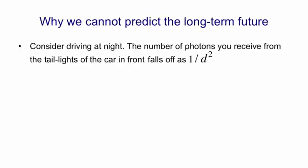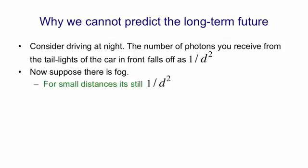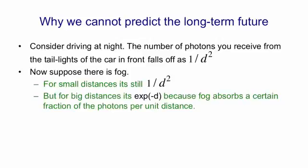That's assuming that the air is clear. But now suppose there's fog. Over short ranges, the number of photons you get from the taillights in front of you still falls off as 1 over d squared, because over a short range, the fog hardly absorbs any light. But for large distances, it falls off as e to the minus d. That's because fog has an exponential effect. Fog absorbs a certain fraction of the photons per unit distance.